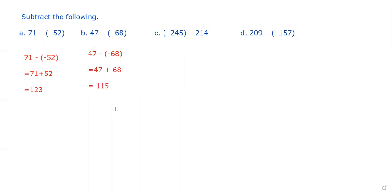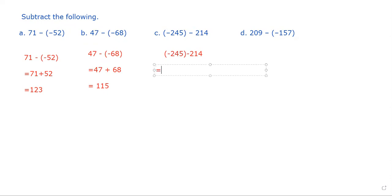Let's see the third example: negative 245 minus 215. We write the question: negative 245 minus 214. It means we are subtracting 214 from negative 245. We remove the bracket, giving us negative 245 and negative 214. Now both numbers are negative. According to the rules of integer addition and subtraction, when two negative numbers are given, there is addition between them but the answer is negative. So 245 and 214 are added to get 459, which is negative.